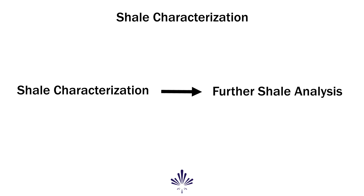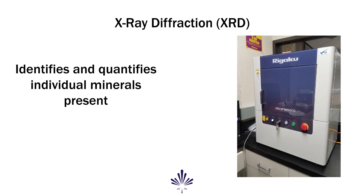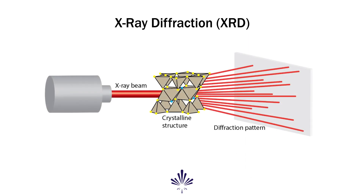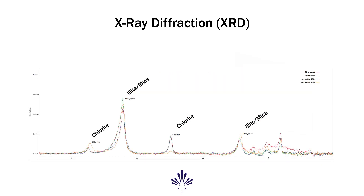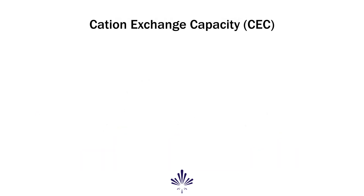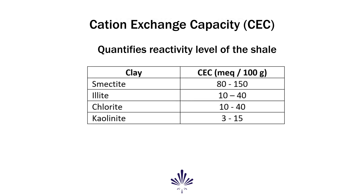Let's discuss some of the common test procedures used for the initial shale analysis. XRD, or X-ray diffraction, is used to identify the individual minerals present in a shale sample. The sample is rotated while being illuminated by X-ray beams. The crystalline structure of each mineral causes the X-ray beams to be diffracted, resulting in a unique diffraction pattern for each mineral present. Cation exchange capacity is also determined, which is another indicator of the reactivity of the shale. The CEC value is closely related with the content of highly reactive clay minerals such as smectite.